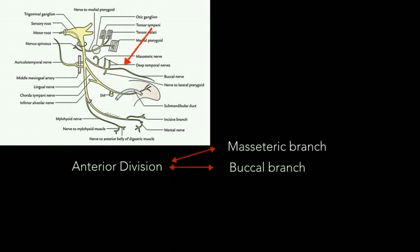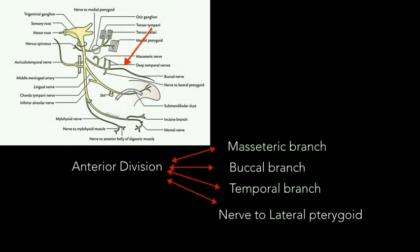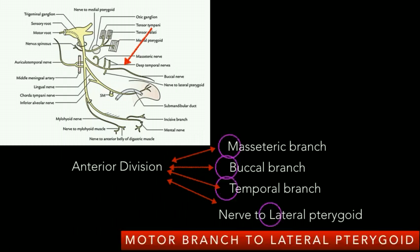The anterior division gives out four branches: the masseteric branch, the buccal branch, the temporal branch, and the nerve to lateral pterygoid. The mnemonic is 'Motor Branch To Lateral pterygoid' — M for masseteric, B for buccal, T for temporal, and L for lateral pterygoid. Importantly, in the anterior division, all branches are motor except the buccal branch, which is sensory.